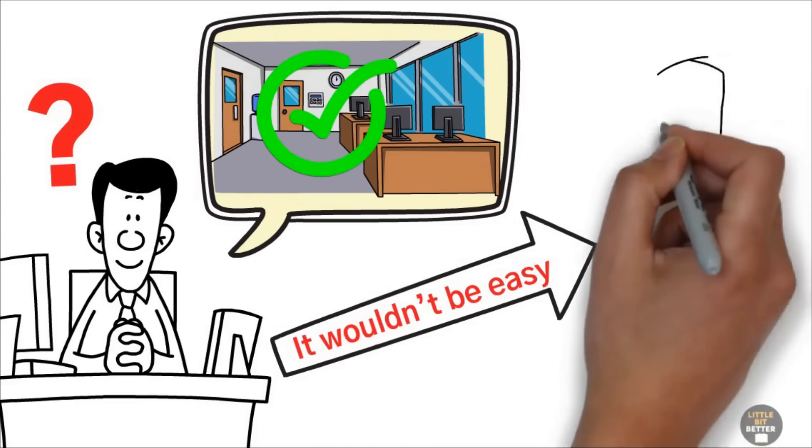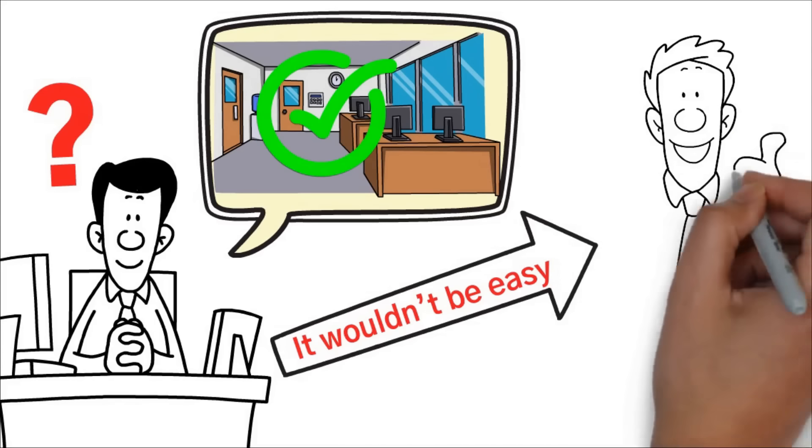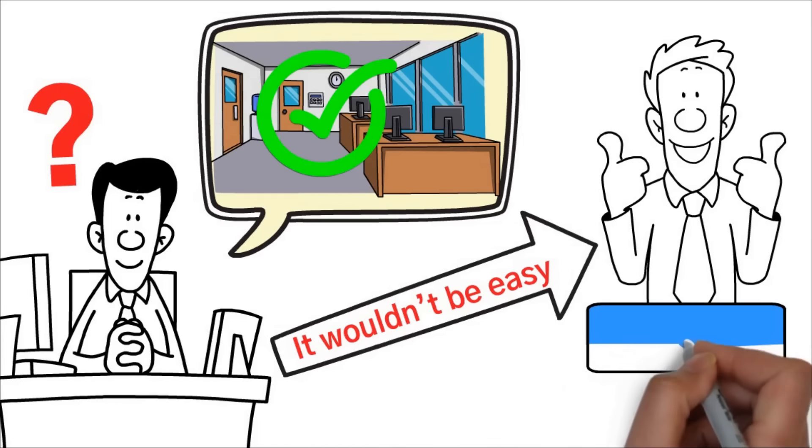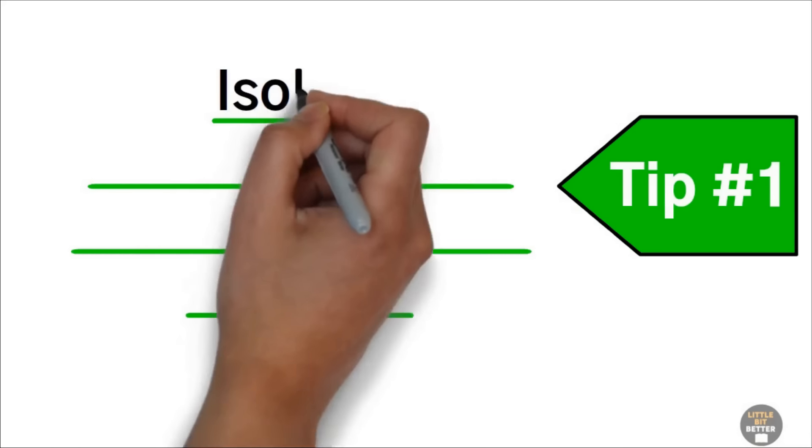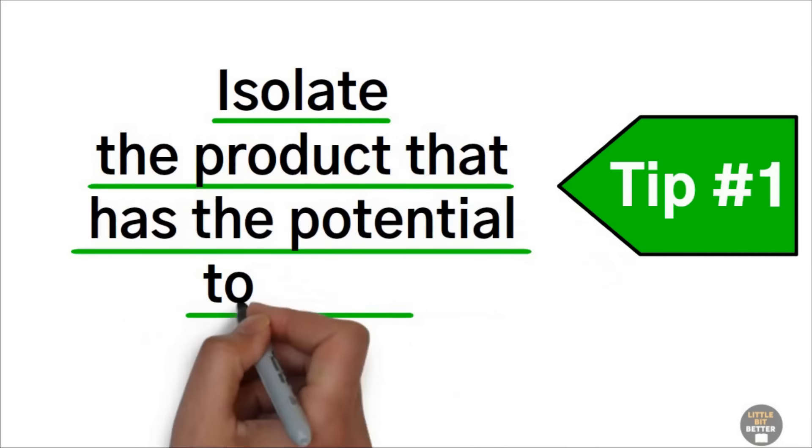Ted asked Alex if he was prepared to follow his advice. Alex said yes, and they agreed to meet every Tuesday at nine in the morning. Ted's first tip? Isolate the product that has the potential to scale.